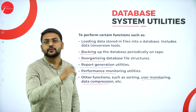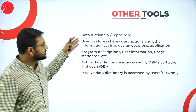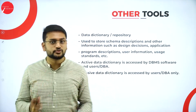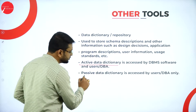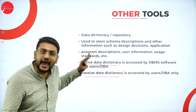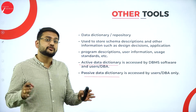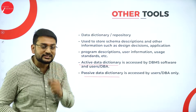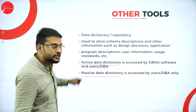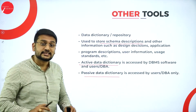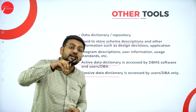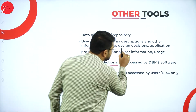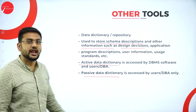The last topic is the data dictionary, which has two types: active data dictionary and passive data dictionary. First, what is a data dictionary? It stores the schema description — not the schema itself but the description of the schema — along with other information such as design decisions and application programs.